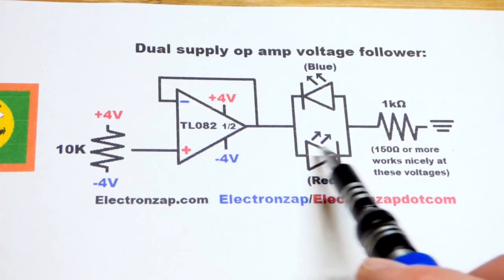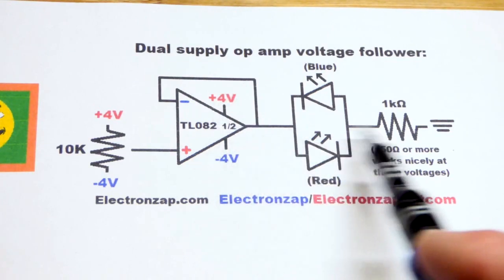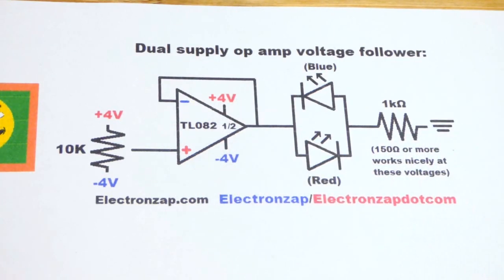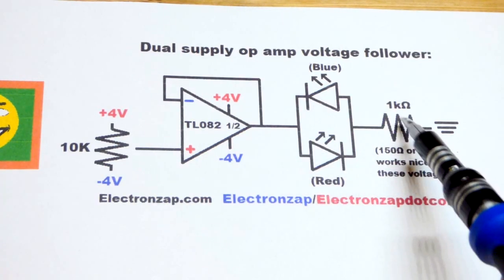We could go lower in resistance with this because we're not dealing with much voltage. Plus 4 or minus 4 in relationship to zero, so only 4 volt maximum. And so 150 ohm would work. LEDs would be brighter.